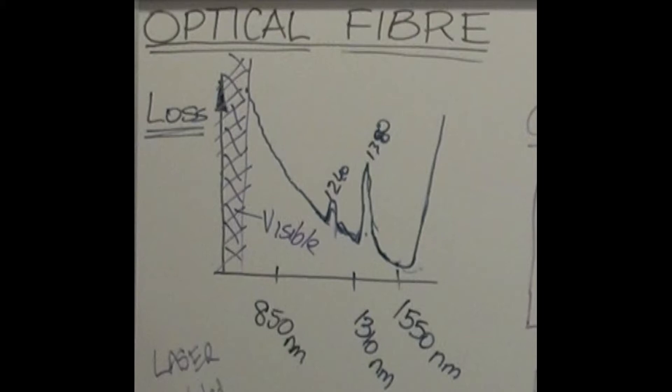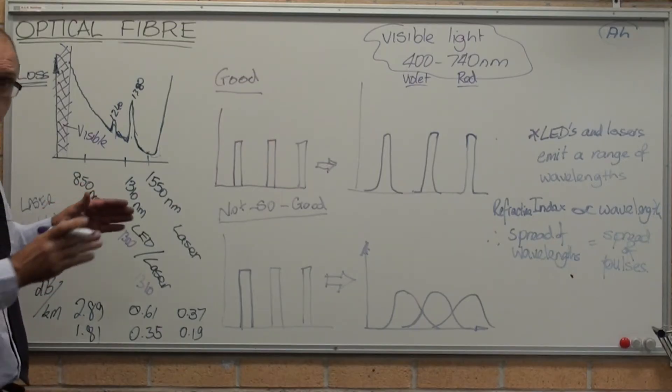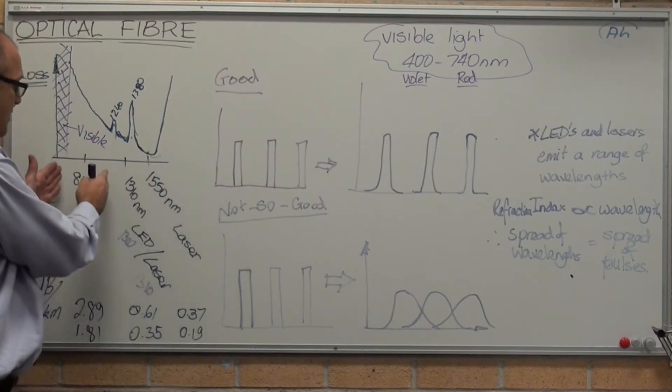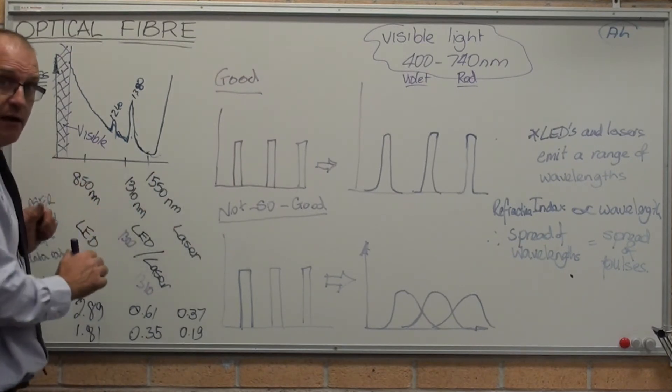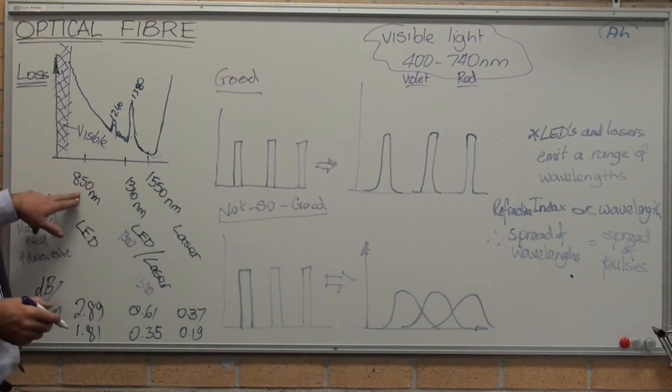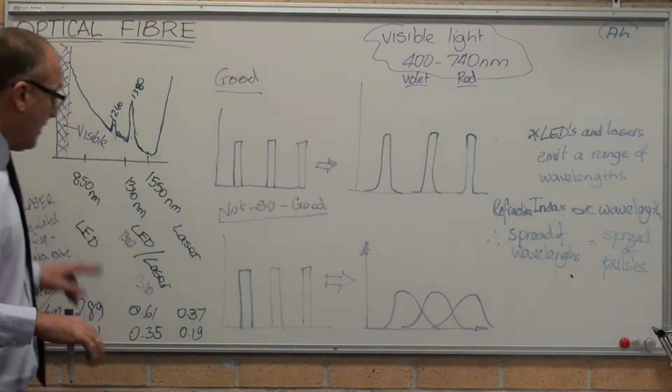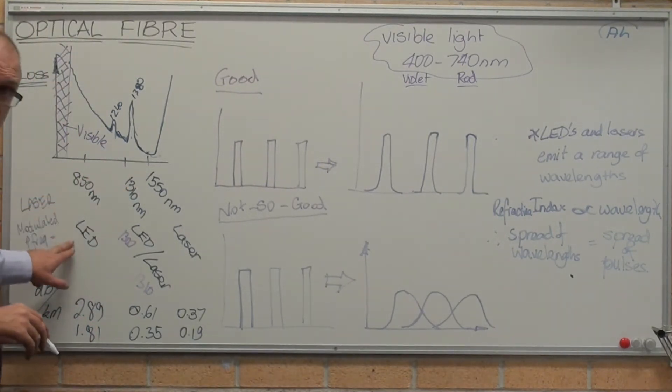Instead, they use infrared and near-infrared wavelengths, which are not absorbed as much. We work on longer wavelengths than visible, which is the infrared and near-infrared. At 850 nanometers, there are three key frequencies used. 850 nanometers is produced by an LED.